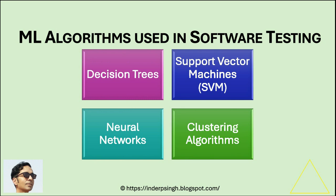The machine learning algorithms useful in AI for software testing include decision trees. These algorithms are interpretable, meaning explainable. For example, they can be used to make decisions about which test cases to prioritize with explanations based on various factors using AI in testing.